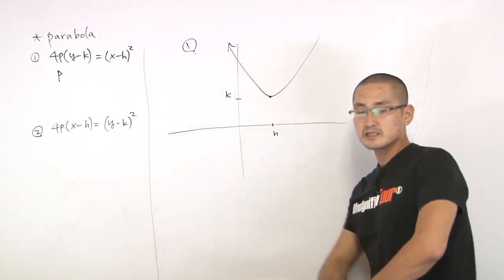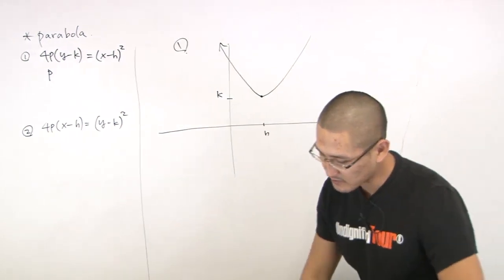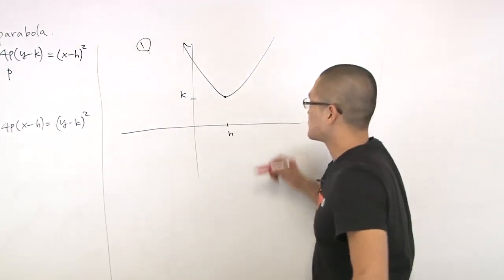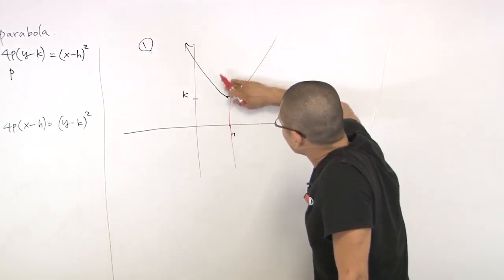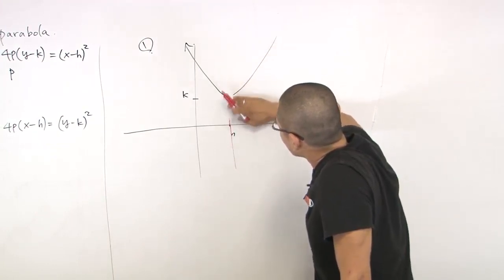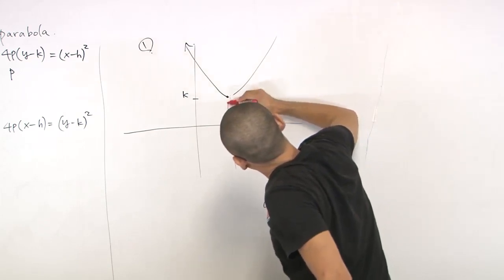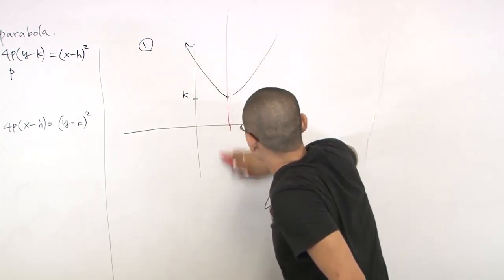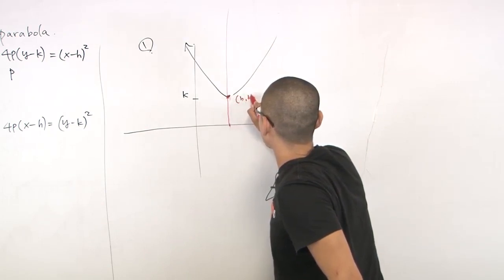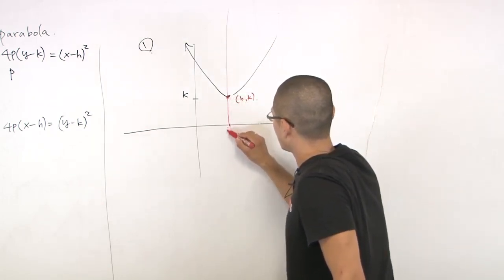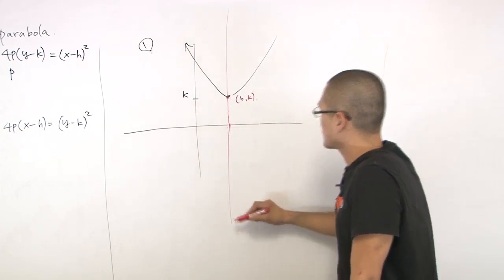Parabola is made by something called focus and directrix. So this P is telling you on the line of symmetry... Let me do some better work here. Here we have that. h is here, so let me just call this h and k. So h is here, so line of symmetry is going down this way.